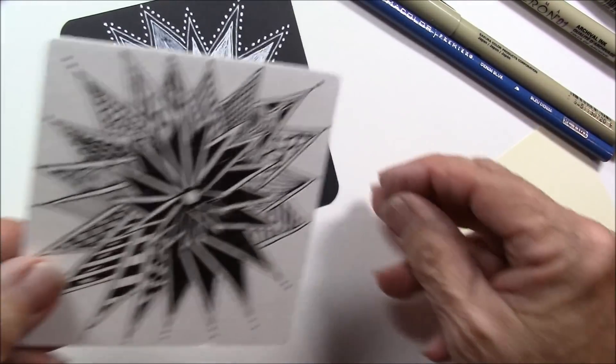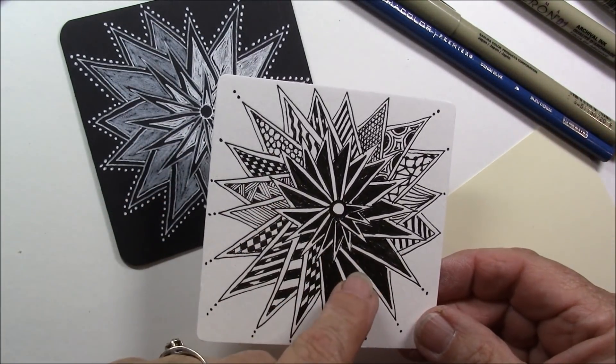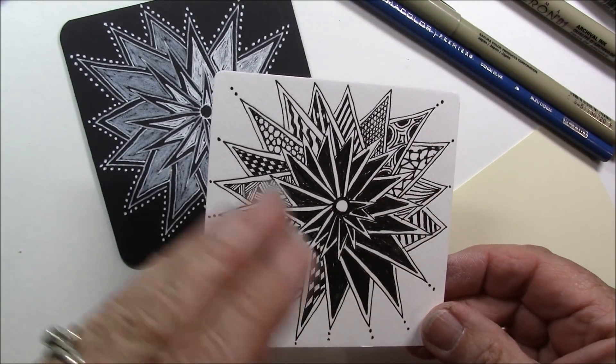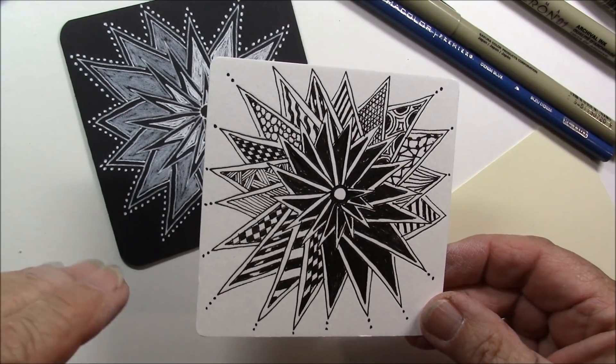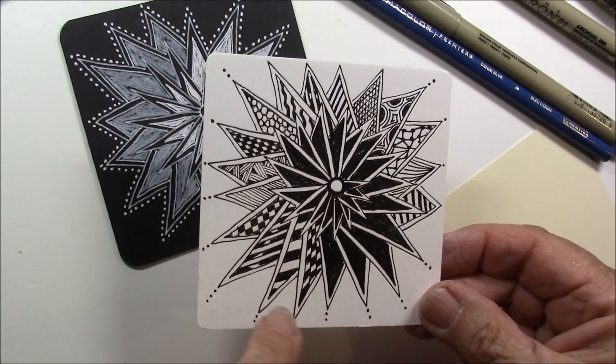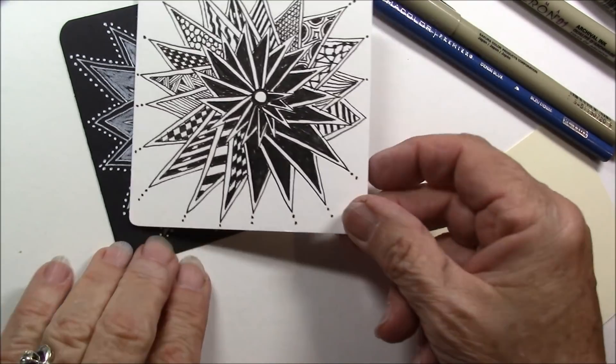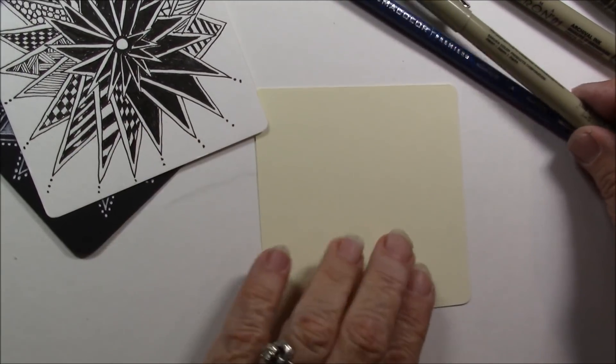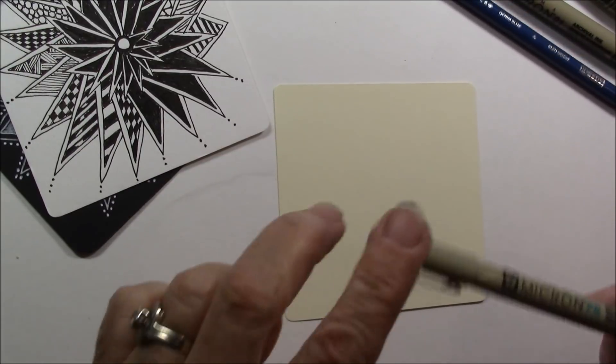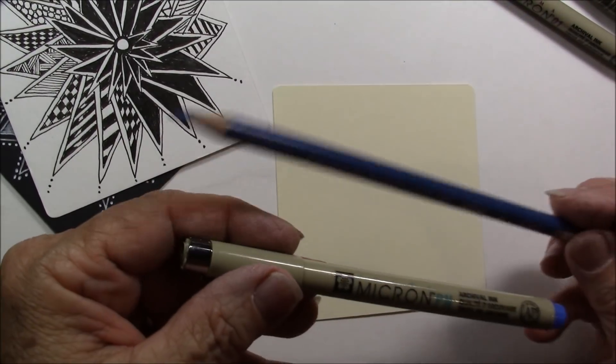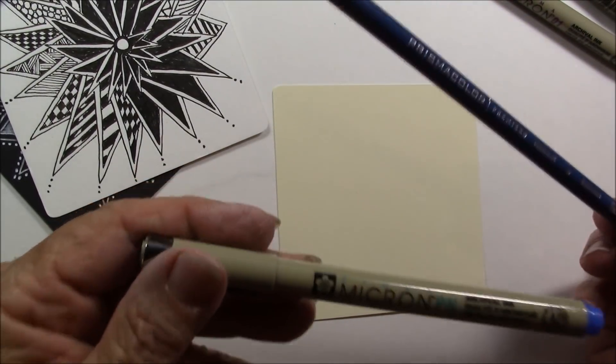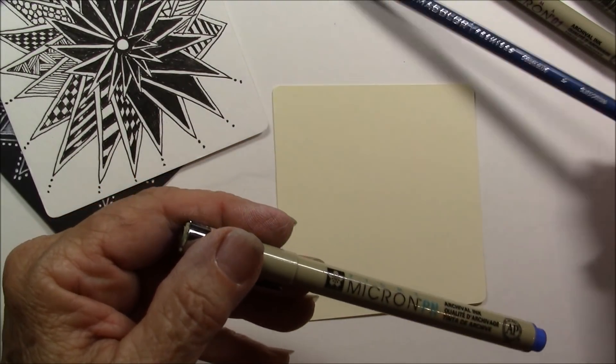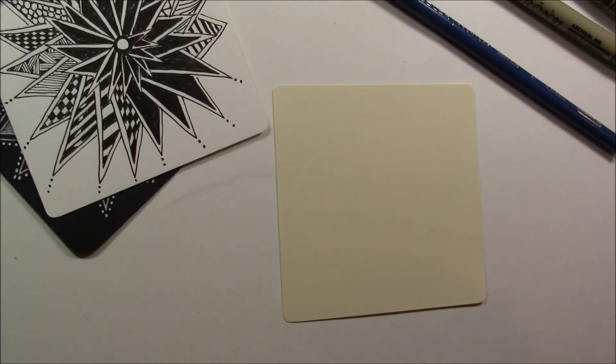And then on this one I started coloring in, and then I decided I would do a little bit like Lily Moon did. Her tangles are always fabulous, and I did some patterns behind. And so I am going to take a cream colored tile, and I'm going to use the blue Micron PN pen and the denim blue Prisma pencil, and we're going to start.